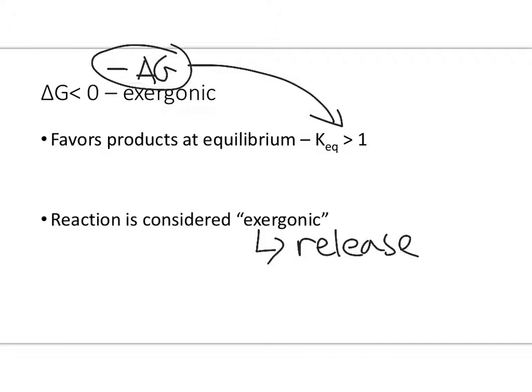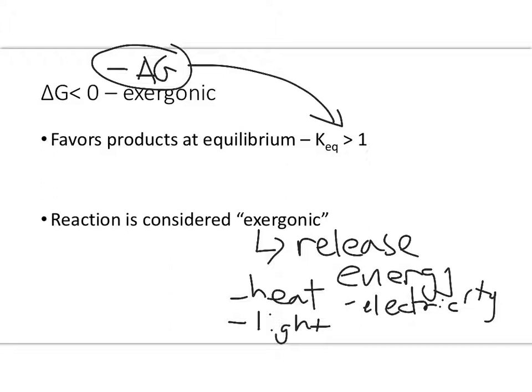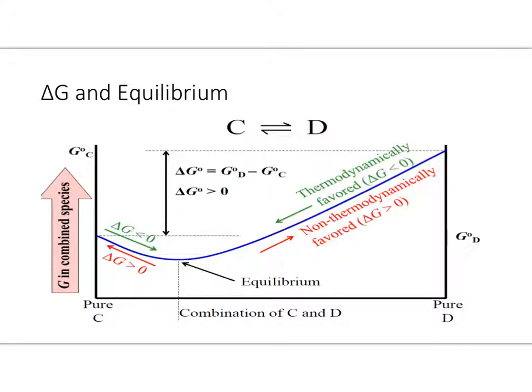And you might say, well, isn't that exothermic? Excuse me, exothermic, right? And the answer to that is no, not necessarily. Exothermic means that it could release heat, but there are other forms of energy that could be released. For example, light can be released, or electricity, or we could just be releasing a gas that does work on the environment around it.